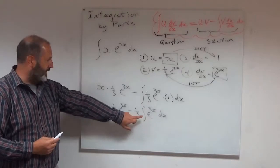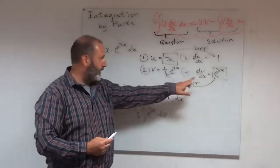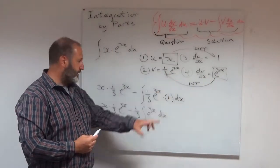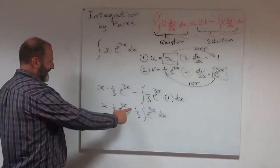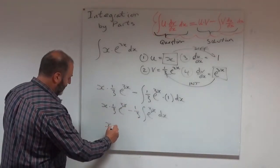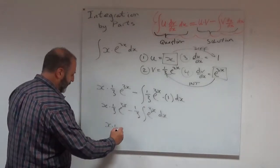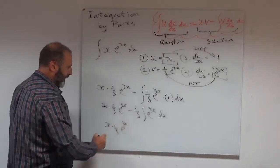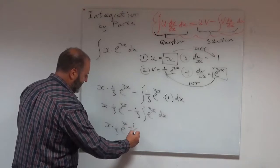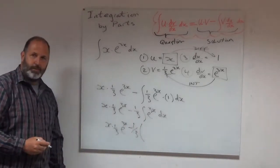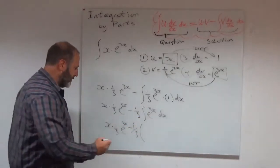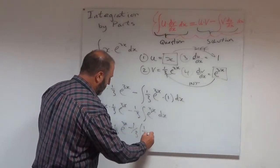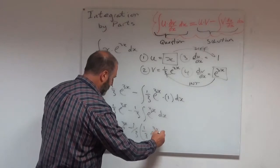We've already seen this, actually. We integrated e to the 3x back here. And we've got 1 over 3 e to the 3x. So I can just write this line out now. So I can say this is my first term. x times 1 over 3 e to the 3x minus a third times, I'll put a bracket there. Well, whatever I get when I integrate e to the 3x, which would be 1 over 3 e to the 3x.